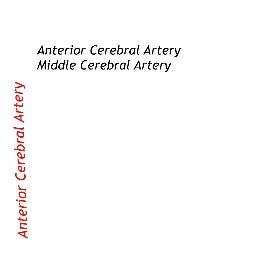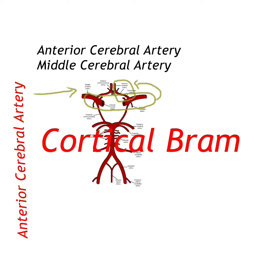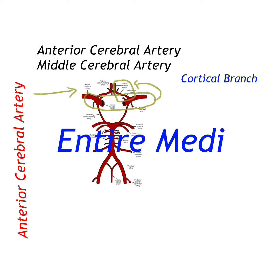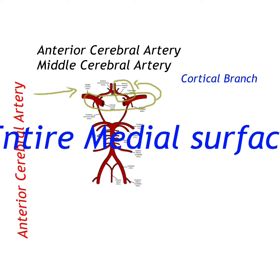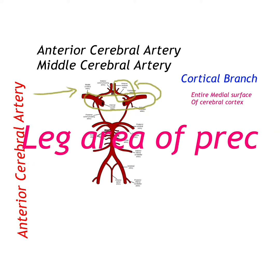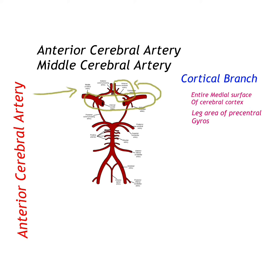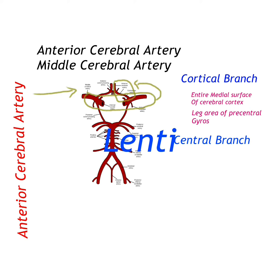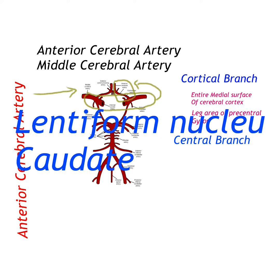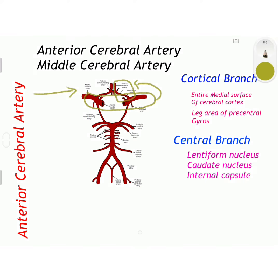The next two are the main branches of the internal carotid artery: the anterior cerebral artery and the middle cerebral artery. The anterior cerebral artery is a small terminal branch of the internal carotid artery. It gives off cortical branches and central branches. The cortical branches supply the entire medial surface of the cerebral cortex and the leg area of the precentral gyrus, whereas the central branches supply the lentiform and caudate nucleus and the internal capsule.